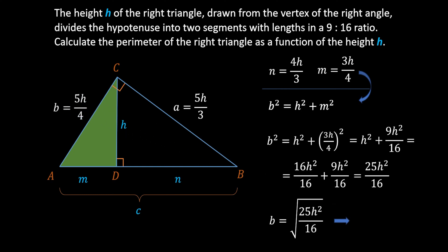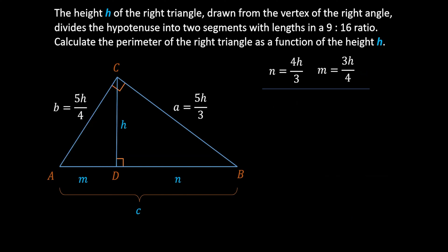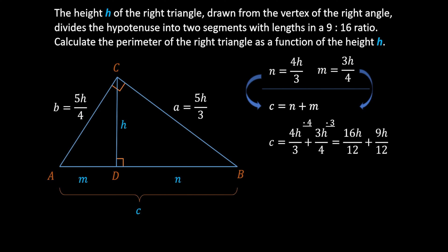We find the value of hypotenuse C by adding segments N and M. Substituting N = 4H/3 and M = 3H/4, we get C equals 4H/3 plus 3H/4. Expanding to a common denominator of 12: 16H over 12 plus 9H over 12, which equals 25H over 12. This is the value of the hypotenuse C as a function of height H.